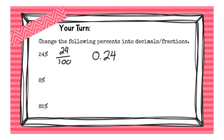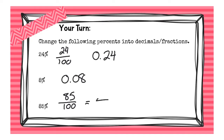For 8%, I only asked you to write it as a decimal, which would have been 0.08 or eight hundredths. For 85%, I asked you to write it as a decimal and as a fraction. If you tried 85 out of 100 and it wasn't an option on the multiple choice, you had to simplify it, and you would see that it simplified down to 17 twentieths. Let's keep going.